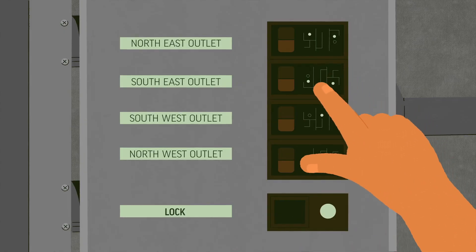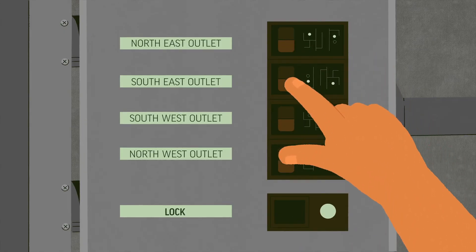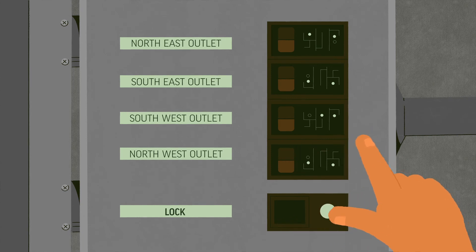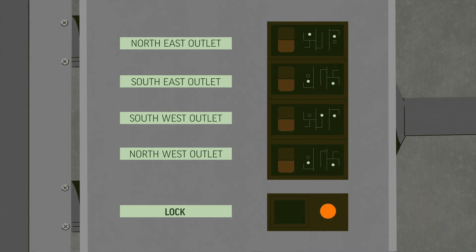Use other common sense measures to stay safe when you're handling grain. Lock out the control circuit before you enter the bin. Shut off power to augers and fans. Keep children away from grain bins and grain carts at all times.